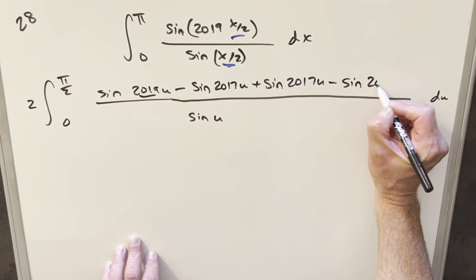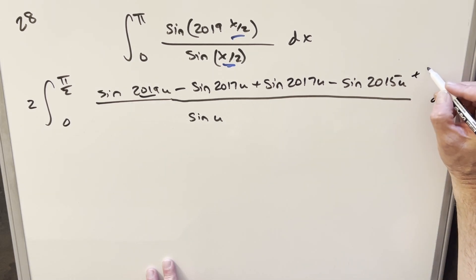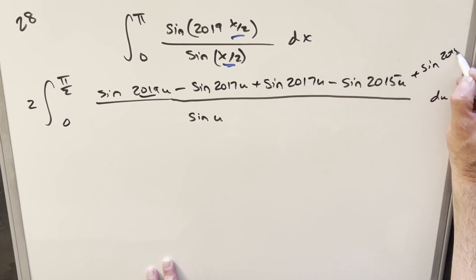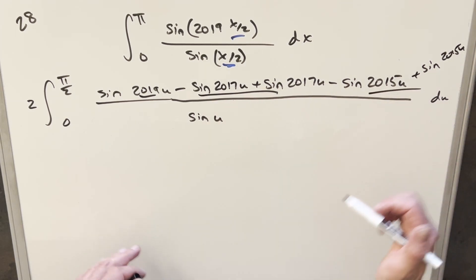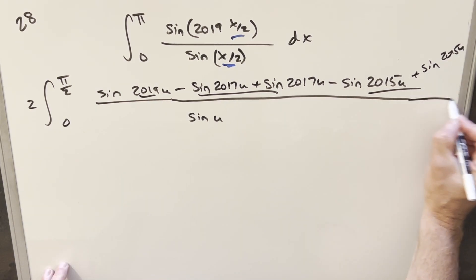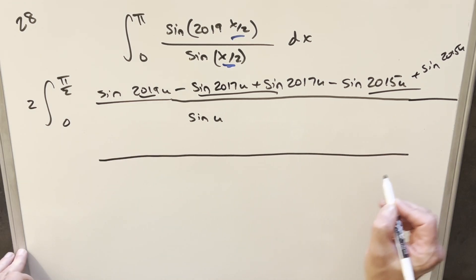So we add back sine 2017 u. And what I'm doing here is creating sine terms where the angle differs by 2, and we're subtracting. Then I want to do the same thing here. I'm going to create a term sine of 2015 u. So again, we're differing by 2. I don't want to change it, so I have to add back another sine of 2015 u. That way, we're adding 0, so we're not changing it.